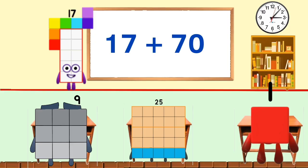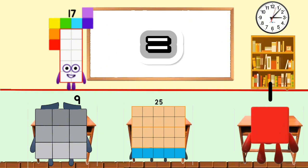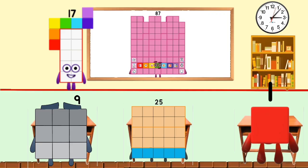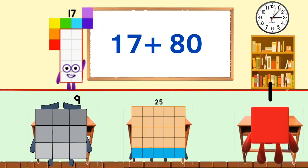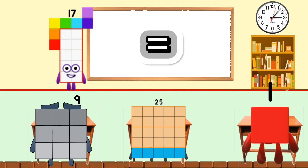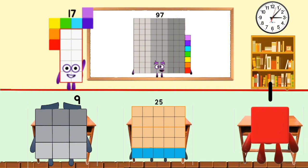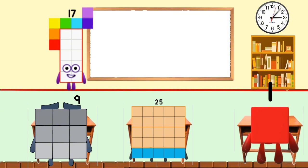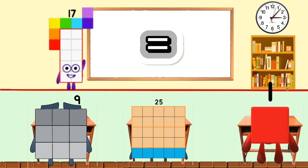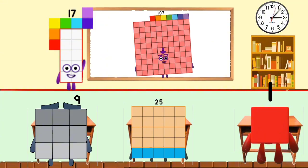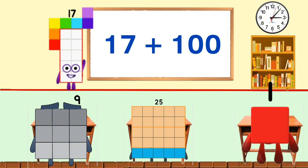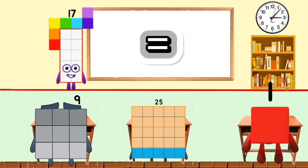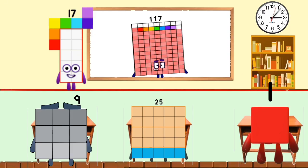17 plus 70 equals 87. 17 plus 80 equals 97. 17 plus 90 equals 107. 17 plus 100 equals 117.